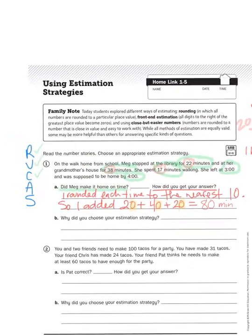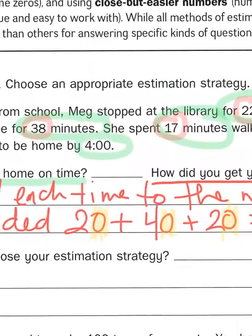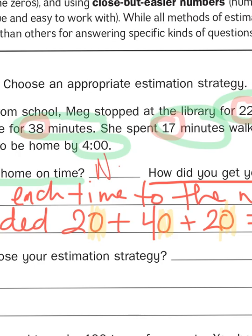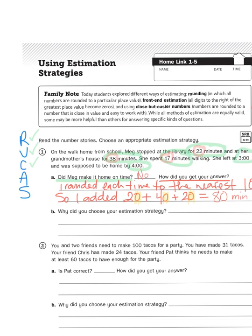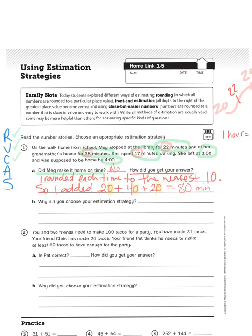So let's go back to reread that question. Did Meg make it home on time? Well, the answer would be no. How did you get your answer? I rounded each time to the nearest 10. So I added 20 plus 40 plus 20, and they gave me 80 minutes.